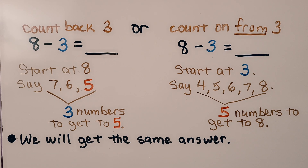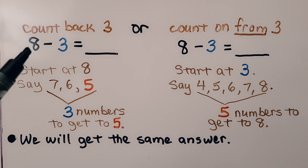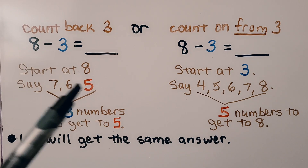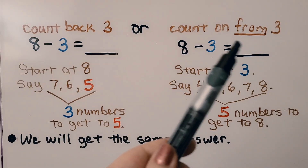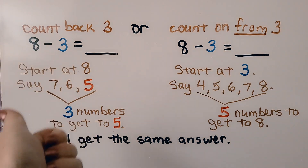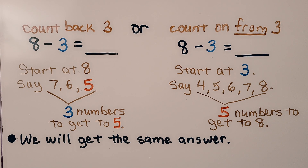We can count back or count on, which is the same as counting up. If we have 8 minus 3, we can count back 3. We start at 8 and say 7, 6, 5. We counted back 3 numbers and landed on 5, so the answer is 5. We can also count on from 3: 4, 5, 6, 7, 8 — that was 5 numbers to get to 8. The difference must be 5.